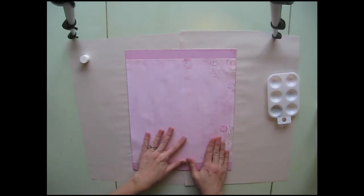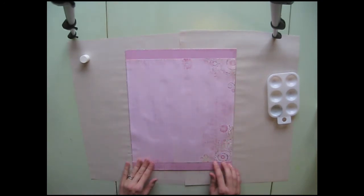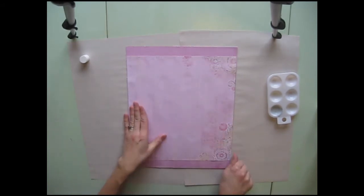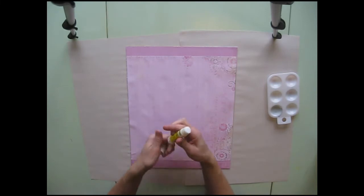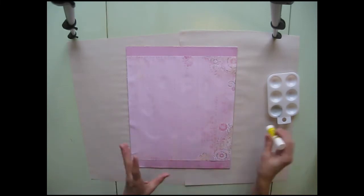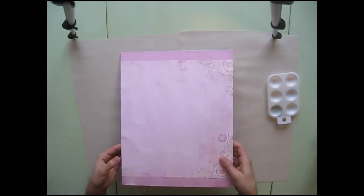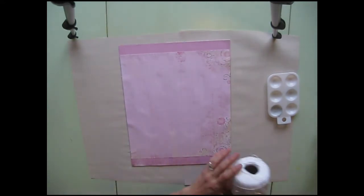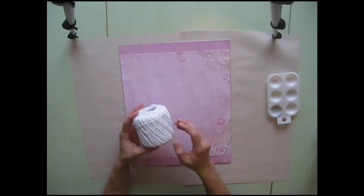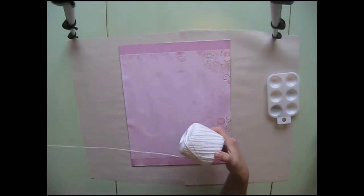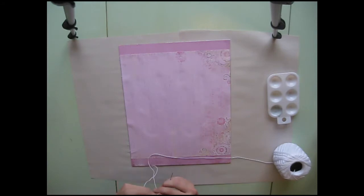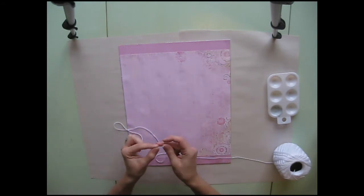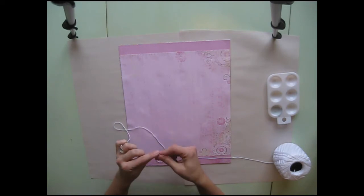Okay now exciting times. I forgot to mention at the beginning of the video that you do need some thread. I'm just using crochet thread and a tapestry needle and this is what I'm going to use to attach my lace to the board. So I'm just going to thread this, take out a length and tie a knot to make it easy to start.